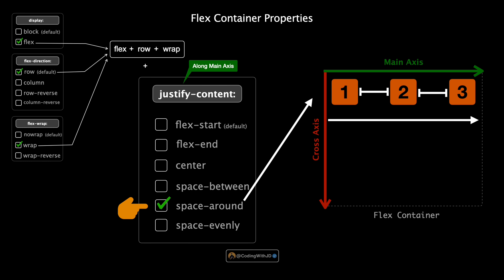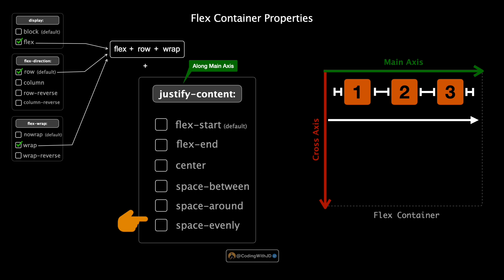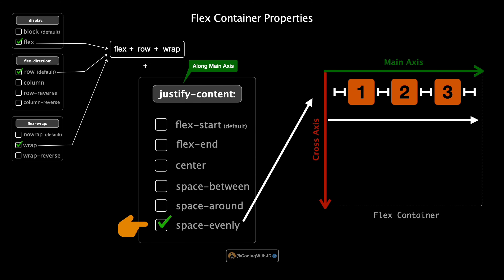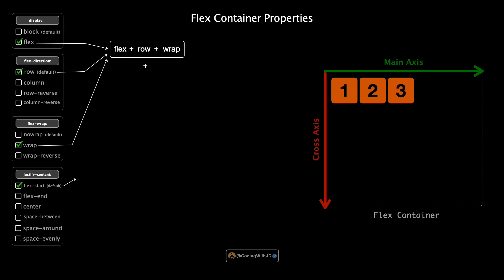With space-around, each item gets an equal amount of space around it, so the space on either side of an item is the same — but notice the space at the beginning and end of the container is half that between items. Lastly, space-evenly is similar to space-around but ensures the space between any two items is the same, including the space at the edges of the container. And that covers justify-content.